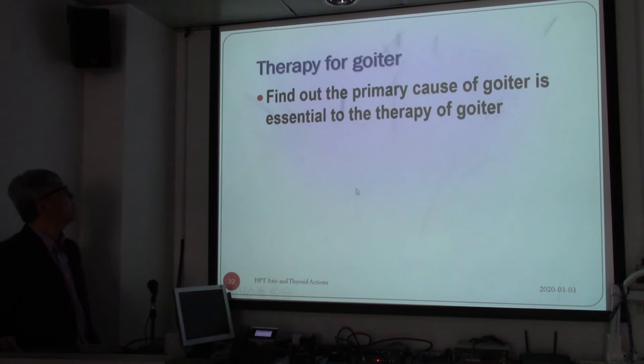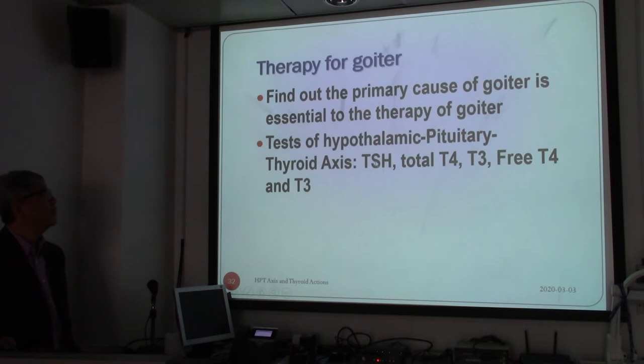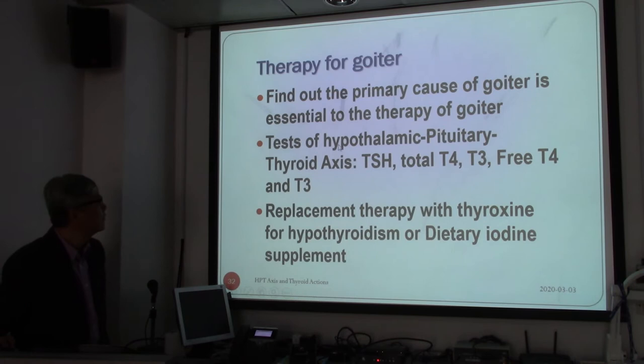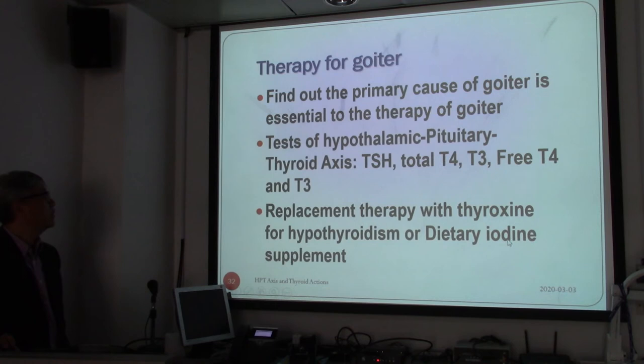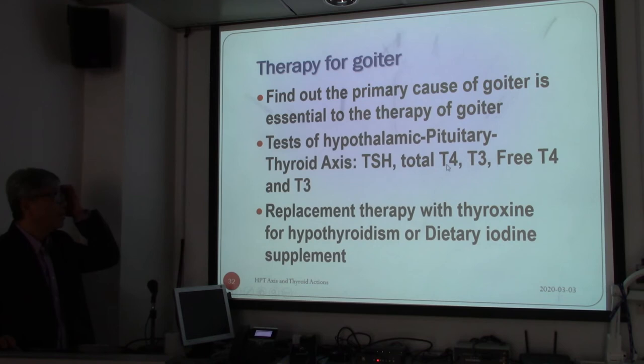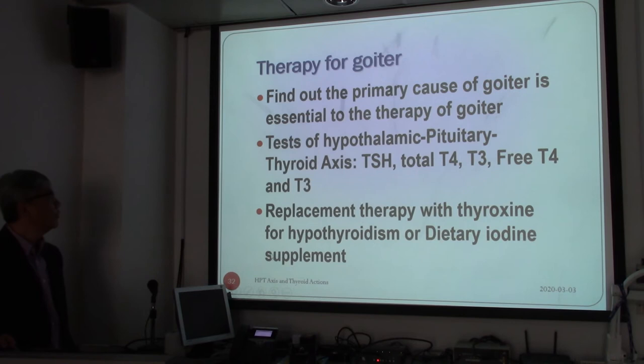Those are minor cases. For therapy, don't just look at the symptoms — we have to understand the primary cause of goiter. Second, run a test: remember we have TSH, total T4, T3, and the inverse relationship. Finally, determine whether the patient is hyper, hypo, or euthyroid. For hypothyroidism it is usually straightforward — supplement with dietary iodine or thyroxine. For hyperthyroidism, we have to find out what kind it is — it could be cancer or Graves' disease and so on.